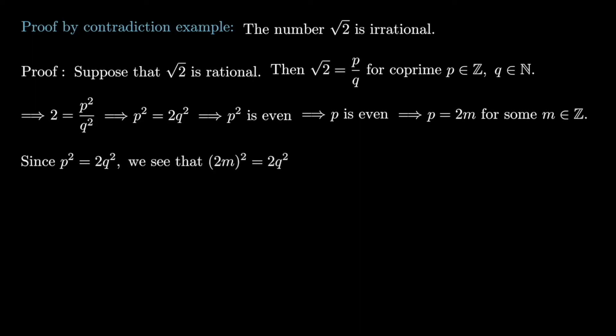Now, since p squared is equal to 2q squared, we can insert our expression for p into this, in which case we see that 2m squared is 2q squared, but this just says that 4m squared is 2q squared, and dividing by 2 tells us that q squared is equal to 2m squared.